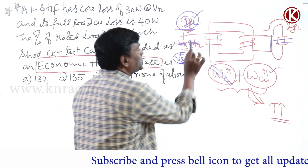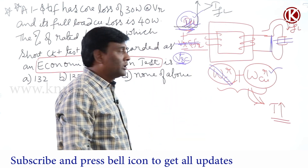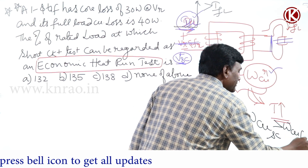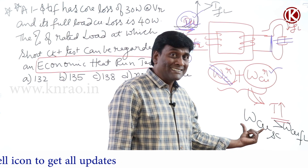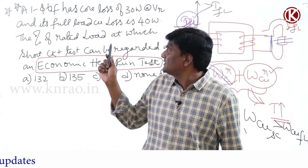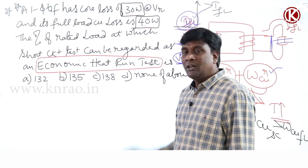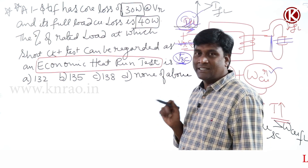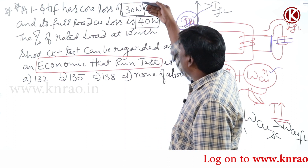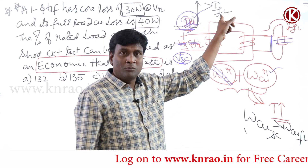Rather than conducting the test at full load, let me conduct this test at more than full load. Under that condition, my copper losses in SC test conditions will be more than copper losses at full load. For example, my copper losses in SC test at more than full load should equal core loss at rated conditions plus copper loss at rated conditions — meaning 30 watts plus 40 watts equals 70 watts. So I am injecting more than full load current.